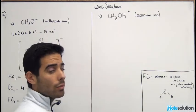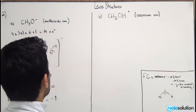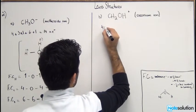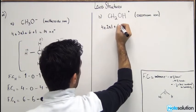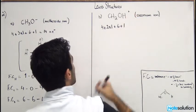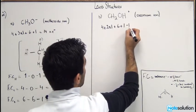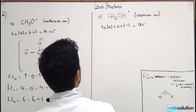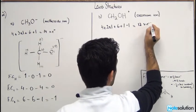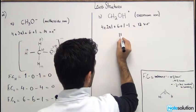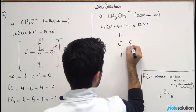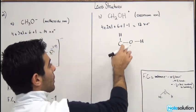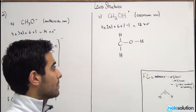Let's solve the next example: oxonium ion CH₂OH⁺. This molecule has similar components to methoxide. Valence electrons: four for carbon, two hydrogens give two, oxygen gives six, one more hydrogen gives one — but because of the positive charge we subtract one. So six plus twelve plus one minus one gives twelve total valence electrons.